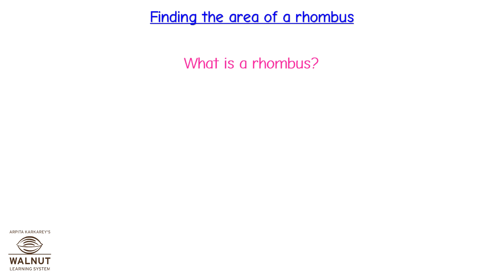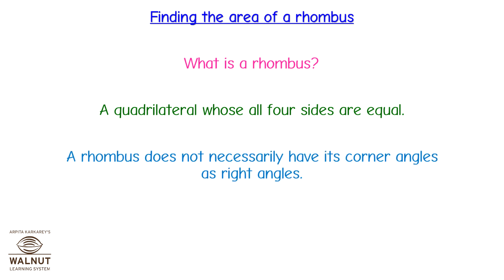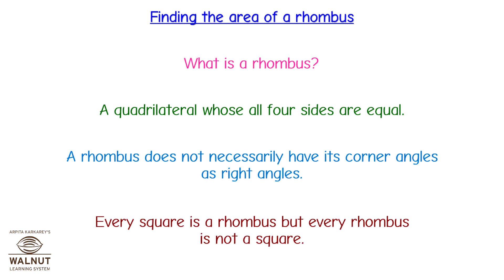What is a rhombus? A quadrilateral whose all four sides are equal. A rhombus does not necessarily have its corner angles as right angles. Every square is a rhombus, but every rhombus is not a square.